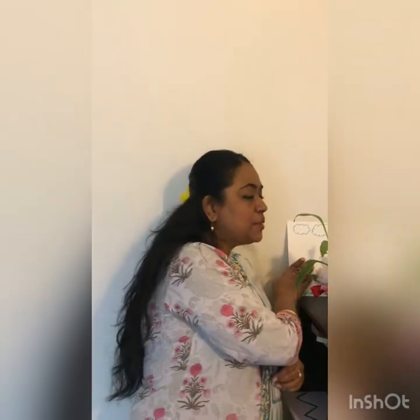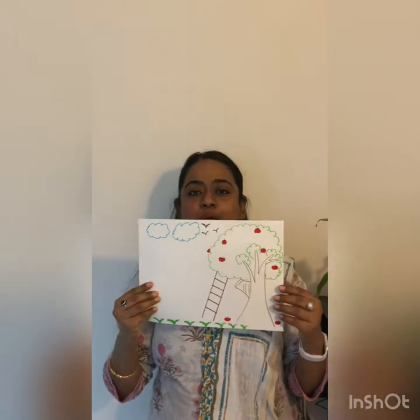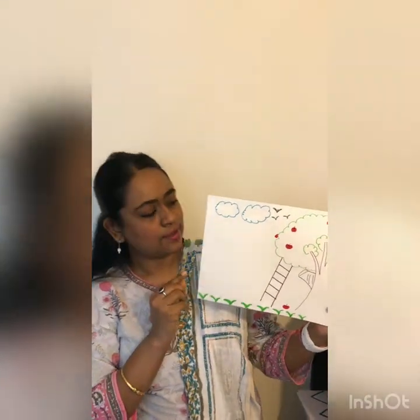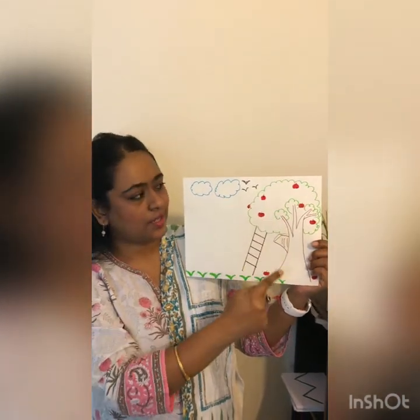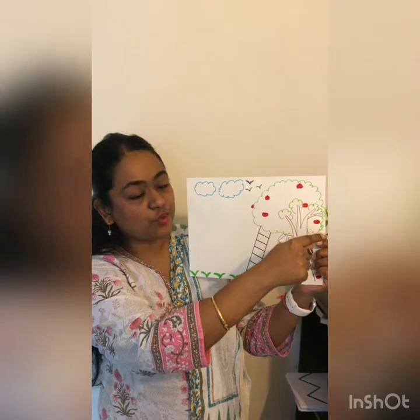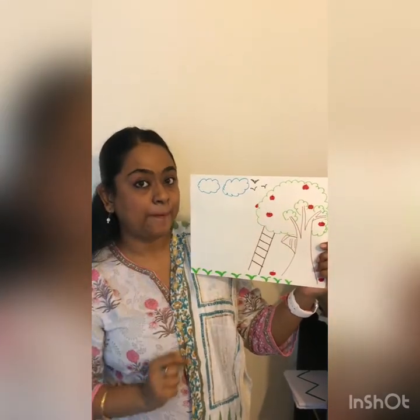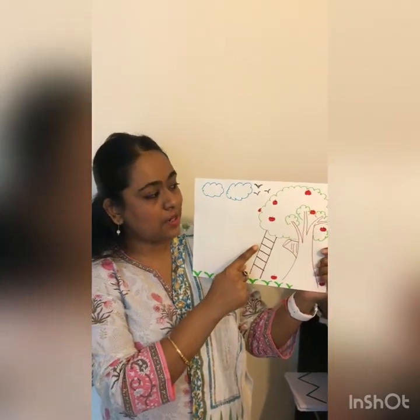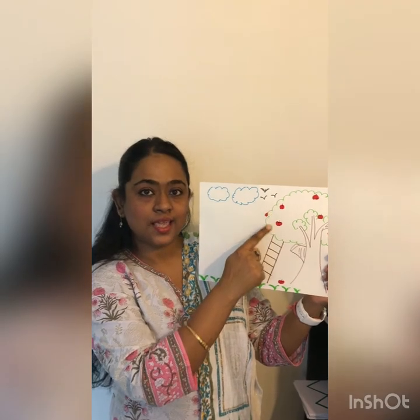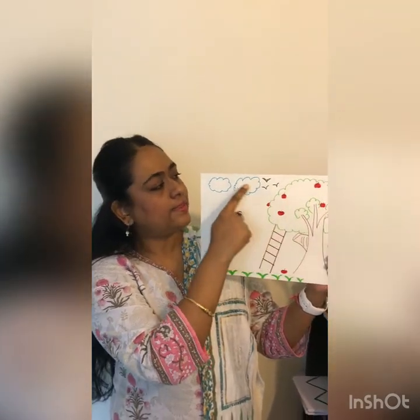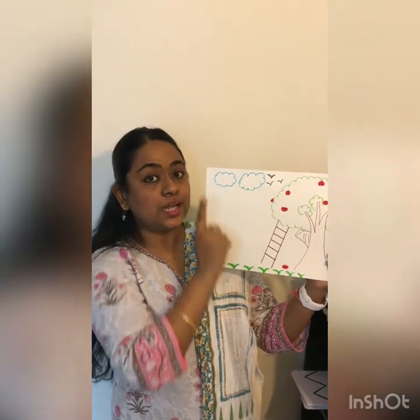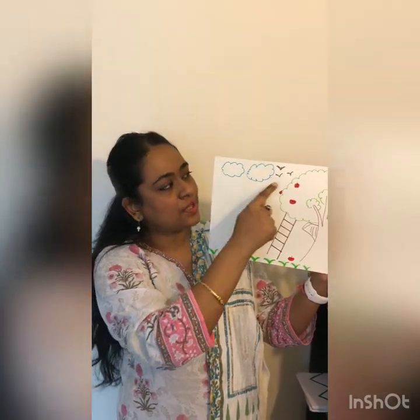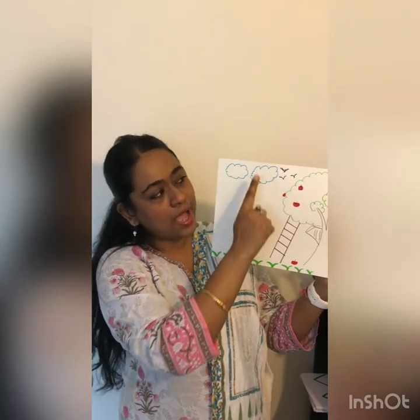Now I will show you another picture to help you understand. See, there is a tree, and there are a lot of red, yummy apples. Apples are up in the tree, right? And there is also some cloud — clouds are up. Birds are also flying up.